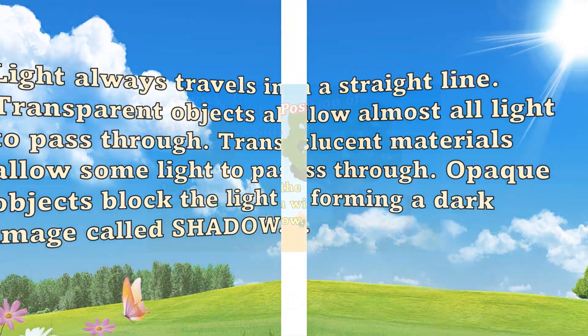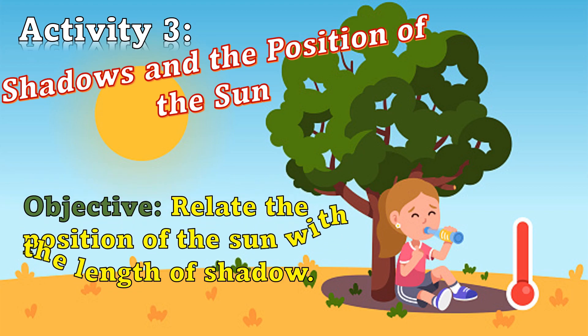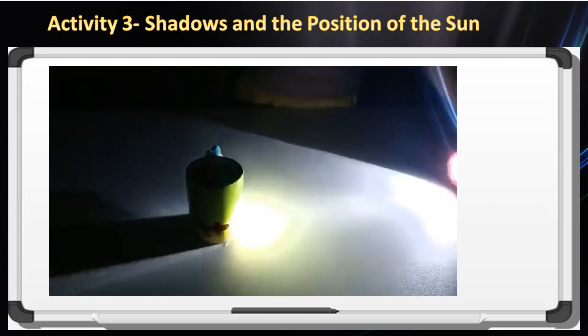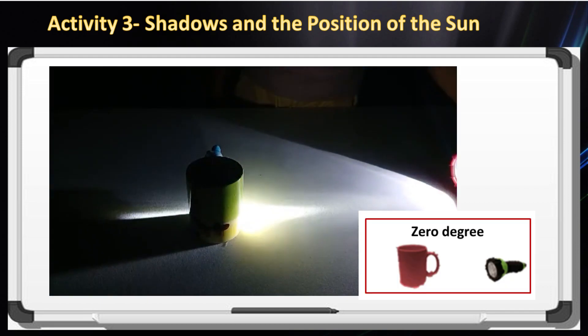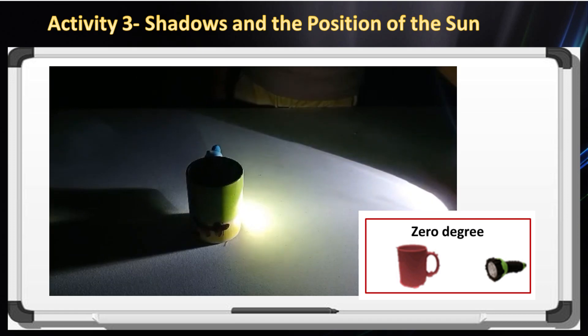Now let's move on to activity 3: Shadow and the Position of the Sun. In this activity, you will relate the position of the sun with the length of the shadow. You need a flashlight and a mug. First, place the mug on the table and position the flashlight by imitating the position of the sun during the day.